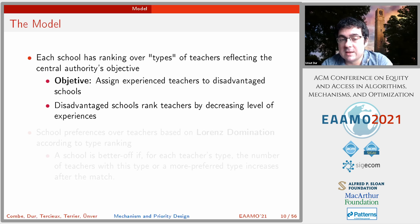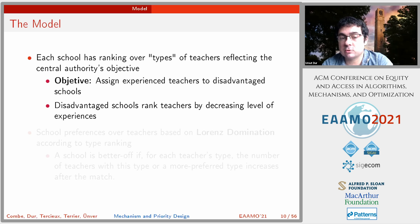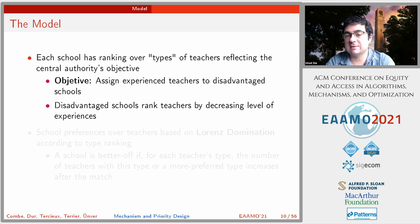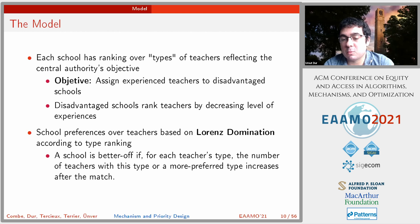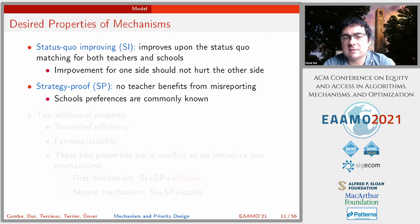On the school side, each school has a ranking over the types of teachers, reflecting the central authority's objectives. For example, if the Ministry of Education wants experienced teachers assigned to disadvantaged schools, those schools will rank teachers by decreasing experience level. We translate these objectives into type rankings for schools. A school's preference over sets of teachers is based on Lorenz domination according to type rank — a school is better off if for each teacher type the number of teachers with that type or a more preferred type increases after matching. The desired properties include statistical improvement.